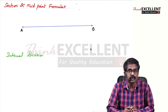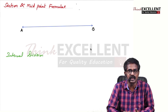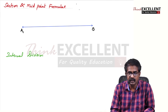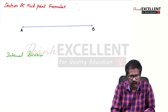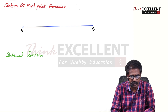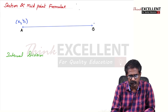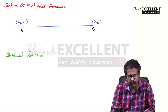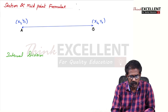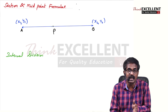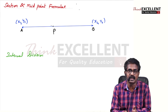In section formula, we have two formulas. One is for internal division, another one is for external division. First I will explain for internal division. A and B are two points. So A is the point X1, Y1 and B is the point X2, Y2. A point P divides internally — the point P lies inside A and B, so we call it internal division.